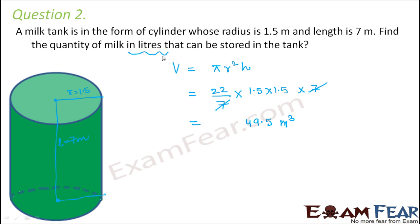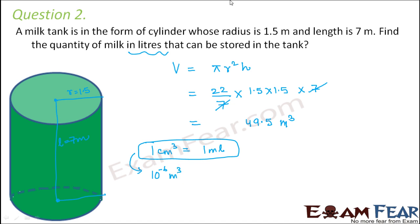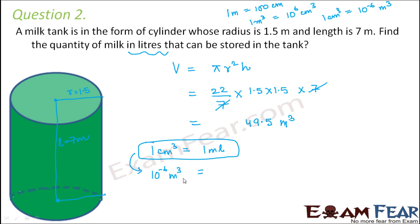Is there any relationship between liters and metre cube? Yes, there is. We know that 1 cm³ = 1 milliliter. Now 1 cm³ = 10⁻⁶ metre cube, because 1 meter = 100 cm, therefore 1 m³ = 10⁶ cm³, and therefore 1 cm³ = 10⁻⁶ m³. So 10⁻⁶ m³ equals 10⁻⁶ milliliter. Now we establish the relationship between metre cube and liter.